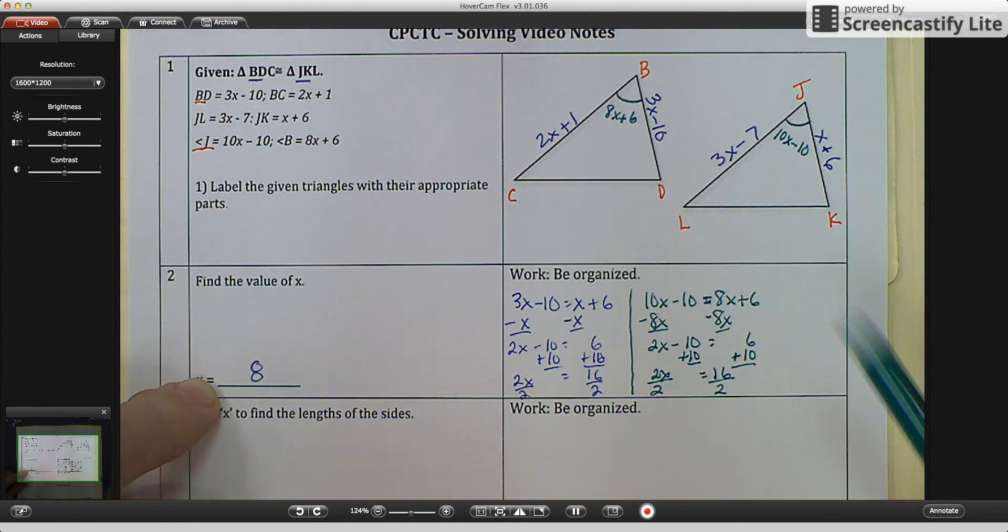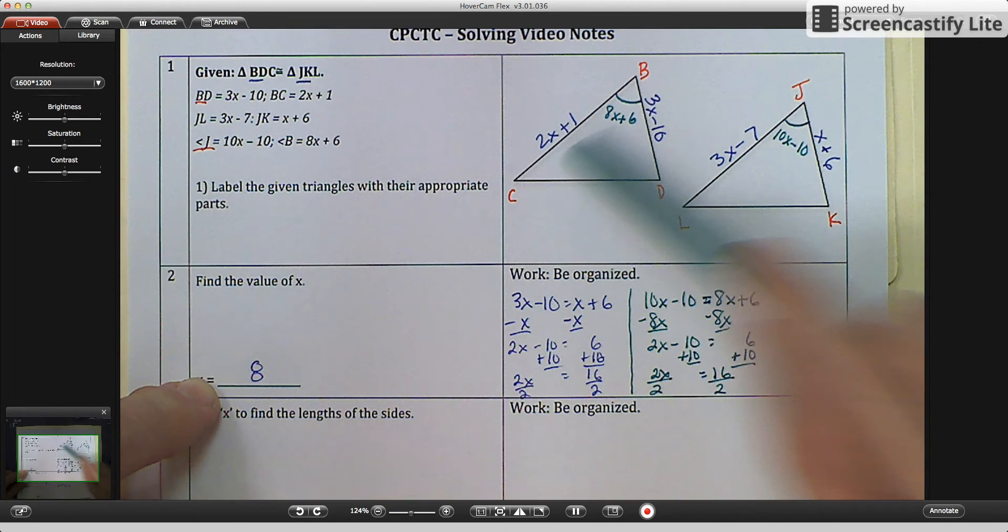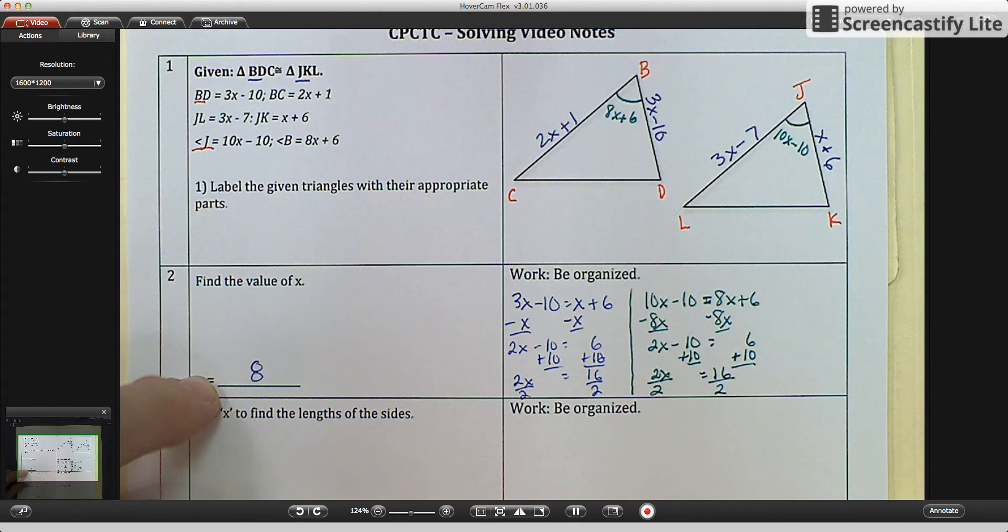And you could also do it for the third set of sides. 2X plus 1 equals 3X minus 7. And you would get the same answer.